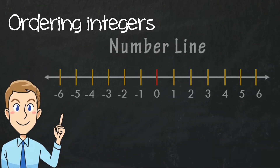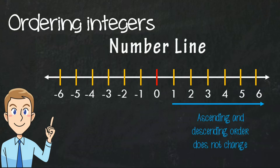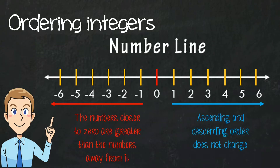Take note that on the positive side, the ascending and descending order does not change. However, on the negative side, the numbers closer to zero are greater than the numbers away from it.